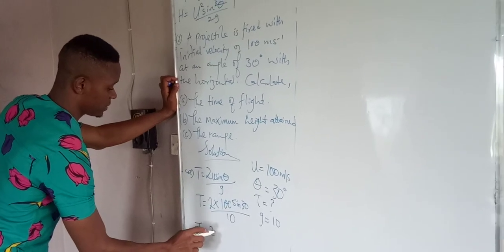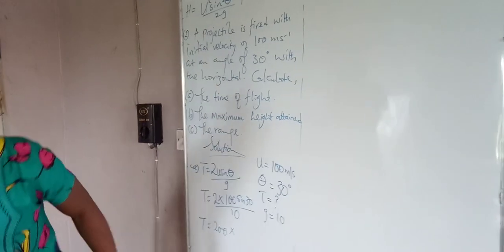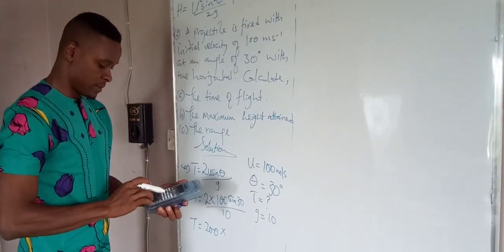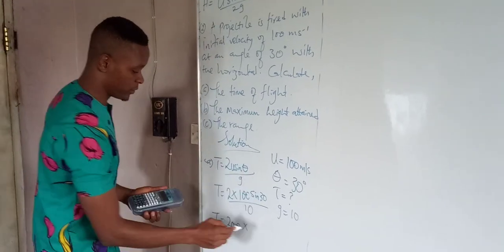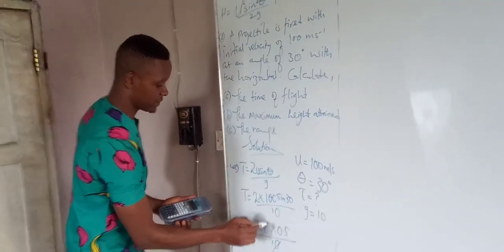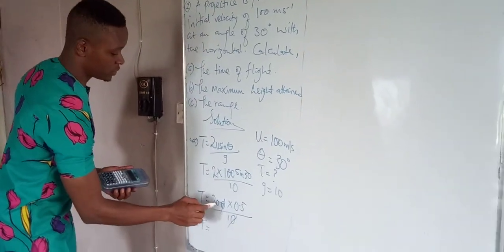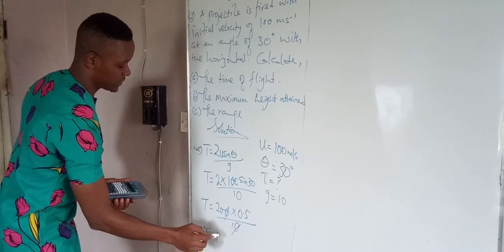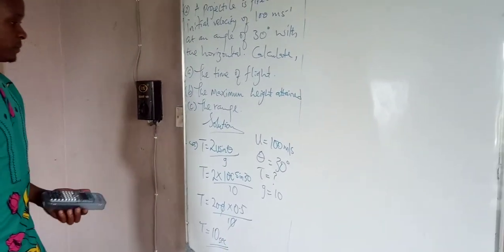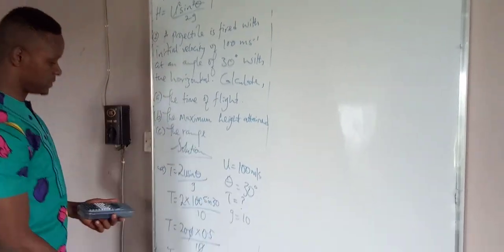t now is 200 times sin 30. t is equal to 20 times 0.5 equals 10 seconds. So, the time of flight will be 10 seconds.